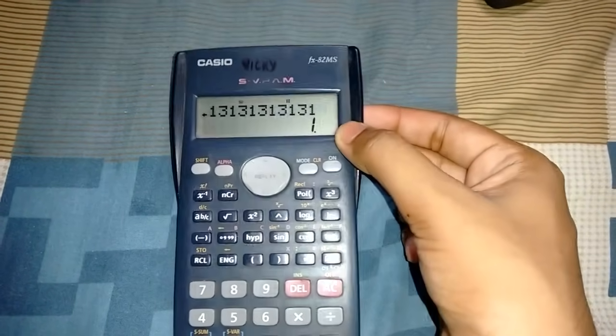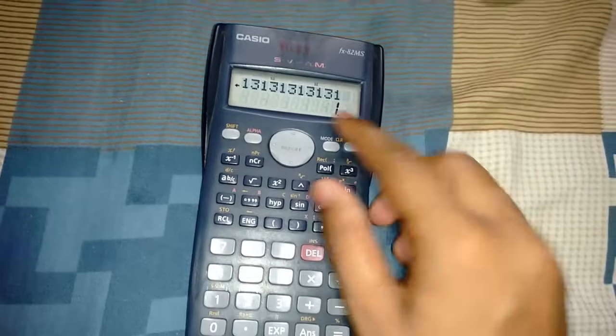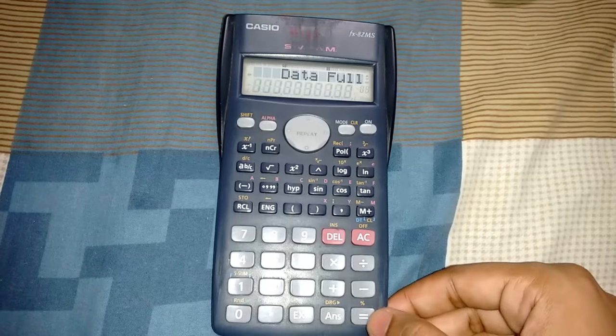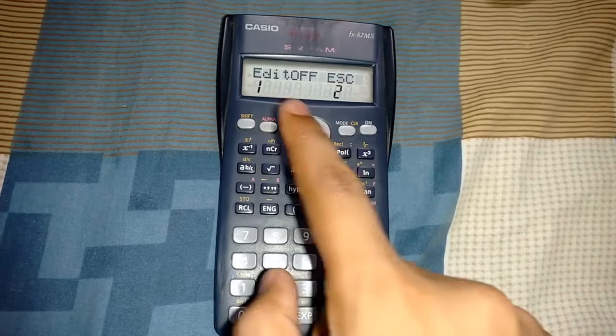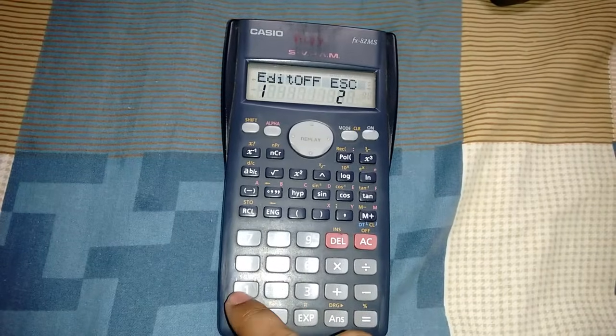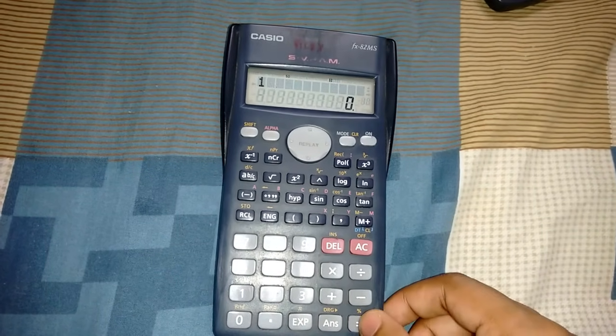Wait until this square dotted blinking bar is full. Now press the equals button. This shows Data Full again, press it. Now again it shows the same menu. Now press 0 and then 1, then hit equals.